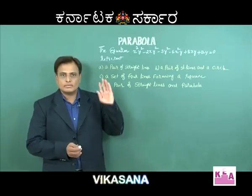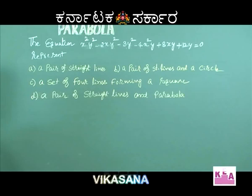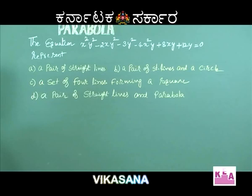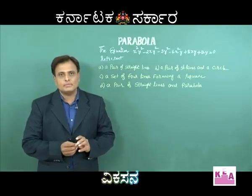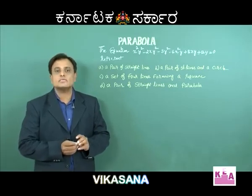Let us move on to the next example. Read the question: the equation x²y² - 2xy² - 3y² - 4x²y + 8xy + 12y = 0. What does this equation represent? Options are: (A) a pair of straight lines, (B) a pair of straight lines and a circle, (C) [four lines forming a square]. This is a very tricky example and we will find what the equation represents through simplification.